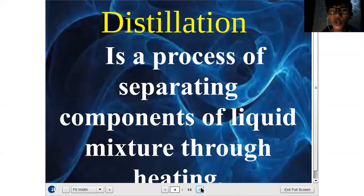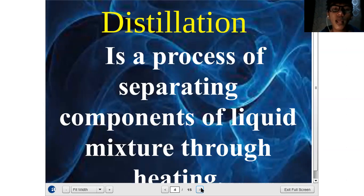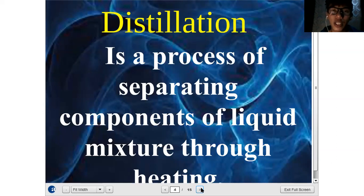The second method is distillation. It is a process of separating components of a liquid mixture through heating. This method is only applicable for a mixture that is liquid. For example, your mixture is soft drinks, which is a homogeneous mixture. The collected substance here is water. If you wish to remove the substances that are combined to form soft drinks, you can use distillation. Before you do this process, you should have a distillation apparatus.